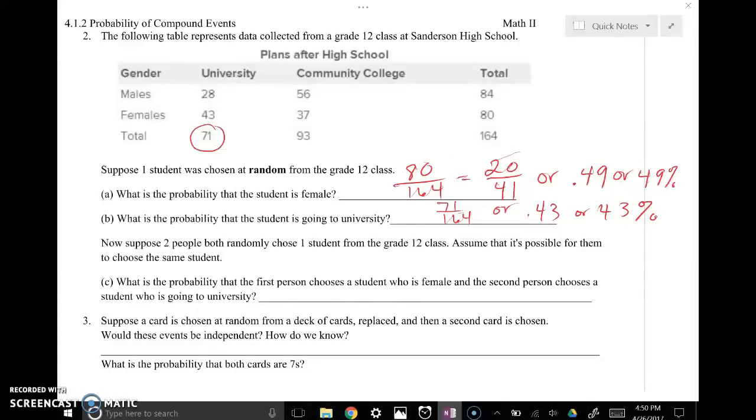So we want to find the two probabilities separate and then multiply them together. So female, we already figured out, was 80 out of 164 or 0.49. That's our probability for female. And then second person chooses a student going to a university, we figured out, was 0.43. So now we just need to multiply those together. So 0.49 times 0.43, that is 0.21 or 21% that we picked two random people. And the first person we picked was female and the second person we picked at random was going to a university. So again, notice that we found the individual probabilities and multiplied them together.